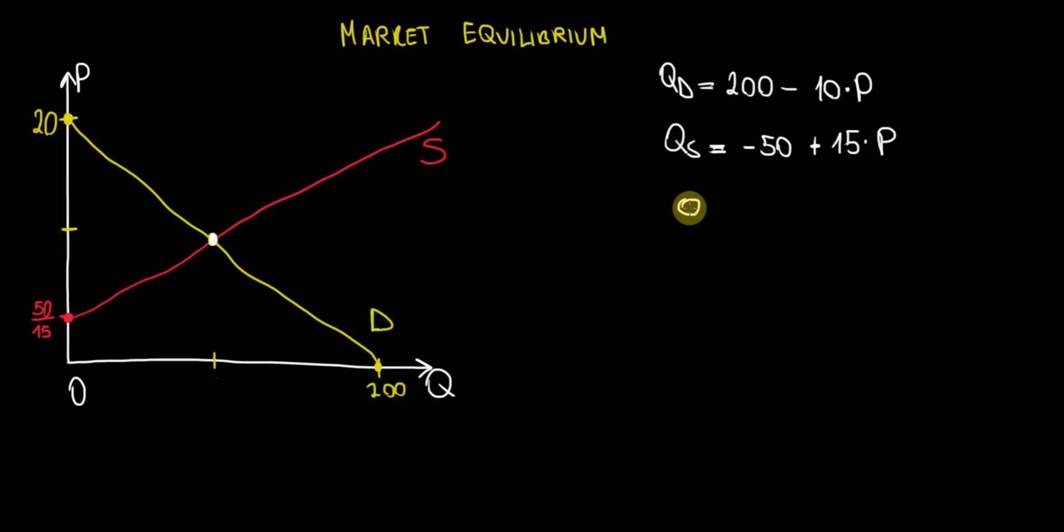Quantity demanded must be equal to quantity supplied. Let me change colors to make it more visible. We are looking for that. The buyers and the sellers agree on how much is going to be transacted on the market.